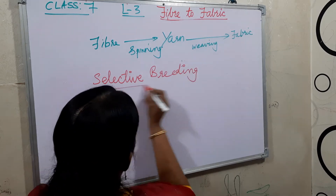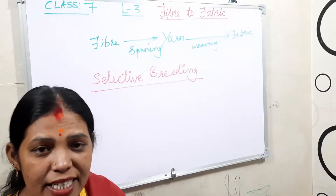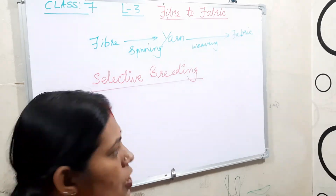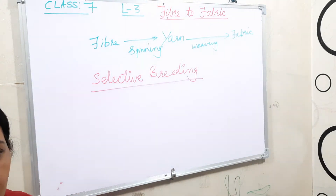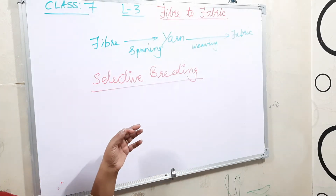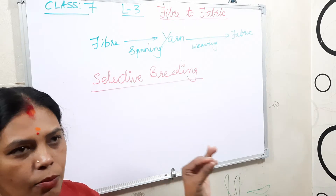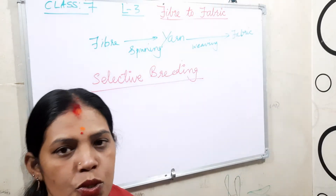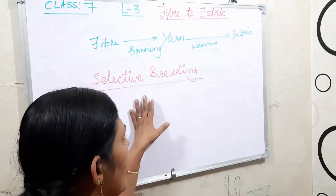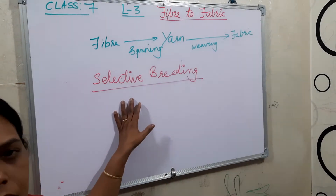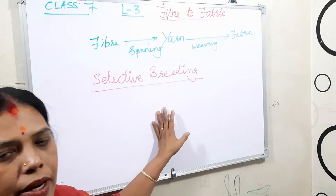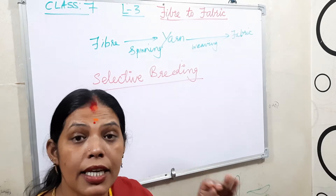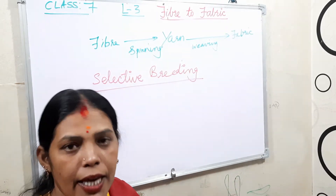Selective breeding means selecting parents with good qualities, mixing them, and getting those qualities in their young ones. Scientists and experienced farmers know which sheep are good, so they choose them and breed them. The selected breeding offspring give fine quality wool and also produce more wool, so production is increased.